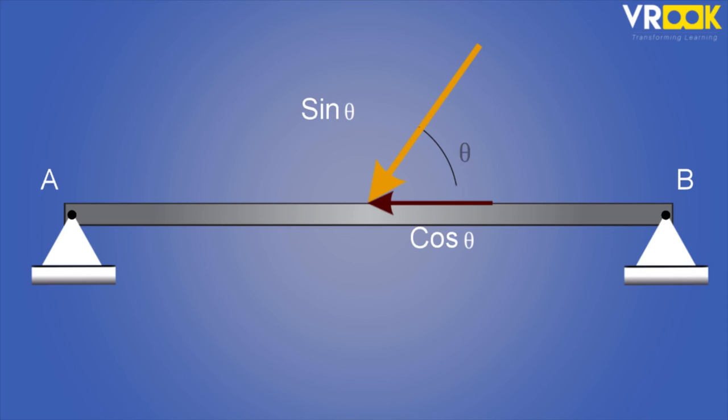Suppose we have an inclined load where the angle is measured from the other end. Then the vertical component would become cos theta and horizontal will become sine theta. These two components of force will be used in equilibrium equations to solve the problem.